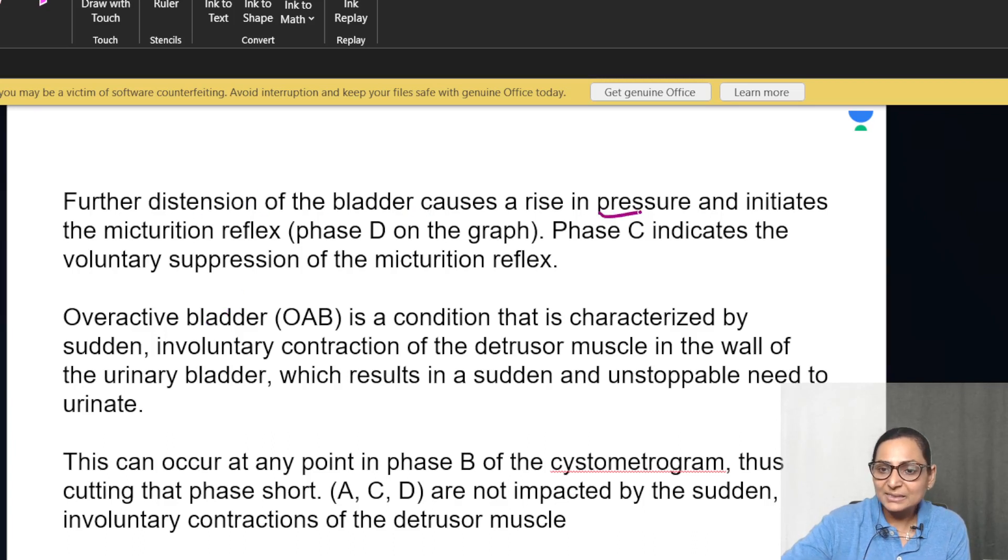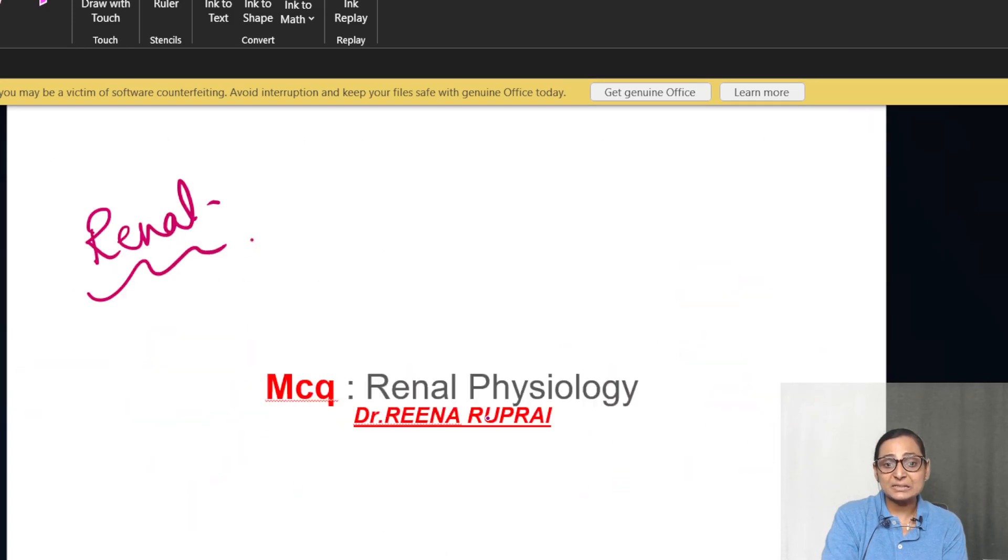Further distension of the bladder will cause a rise in pressure and initiate the micturition reflex. Overactive bladder is a condition characterized by sudden involuntary contraction of the detrusor muscle in the wall of the urinary bladder, resulting in a sudden unstoppable need to micturate. This can occur at any point in the B phase.